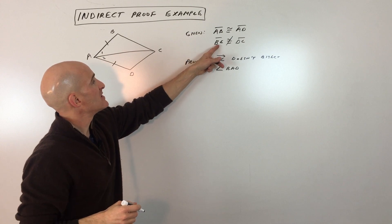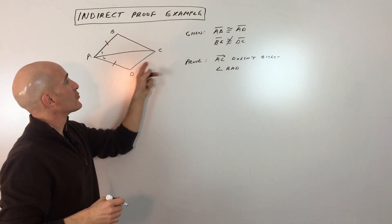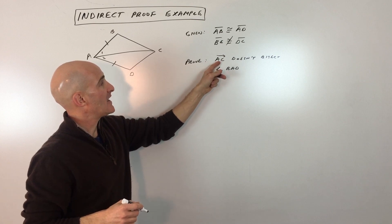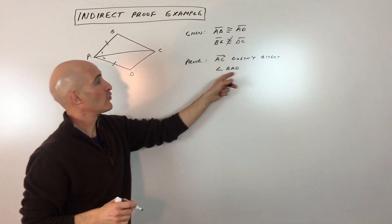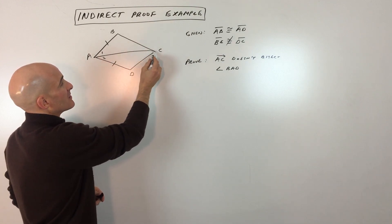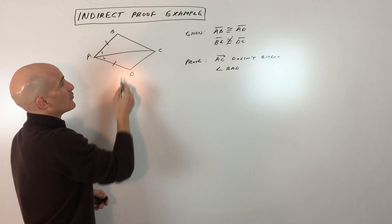And it says that BC is not congruent to DC. What we want to prove is that AC doesn't bisect angle BAD.